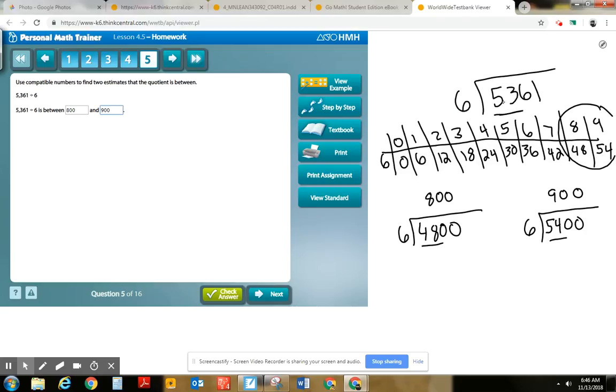But when I look here at 5300, way closer to 5400. So I would use this one. So my best estimate would be 900. 900 times 6 is about 5361.